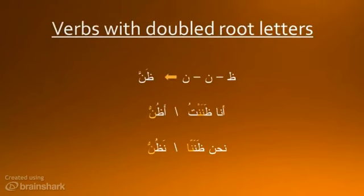What happens when a root has two of the same letter together? This doesn't happen with the first two letters, but it can with the second two: وَانُون نُون becomes وَنَّ. In the past tense, these two noons will usually be separated by a short vowel. But in the present tense, they will always be doubled.